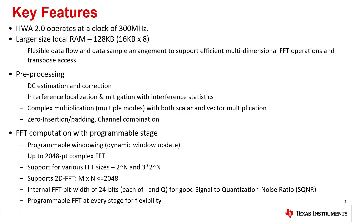Here are the key features of Hardware Accelerator 2.0. It operates at a clock of 300 MHz and has a large local RAM size of 128 KB. With respect to the pre-processing part, there is DC estimation and correction, interference localization and mitigation, multiple complex multiplication modes, zero-padding, channel combination, etc.